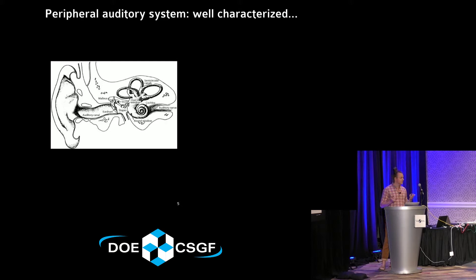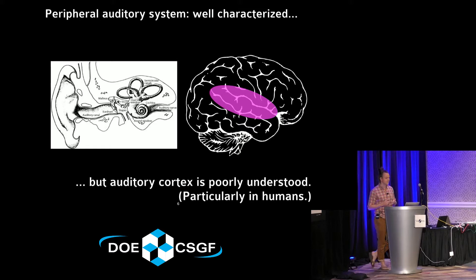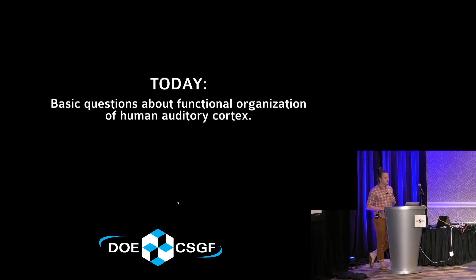In the very early stages of the auditory system, the peripheral auditory system is relatively well characterized, but auditory cortex is poorly understood — these are later stages of the auditory system, and this is particularly true in humans. Today I'll talk about our work addressing some basic fundamental questions about the functional organization of human auditory cortex.